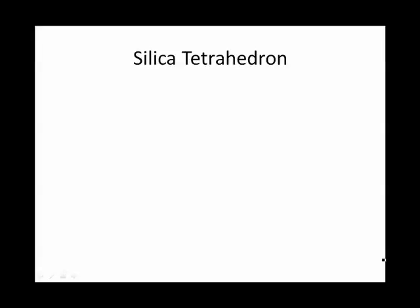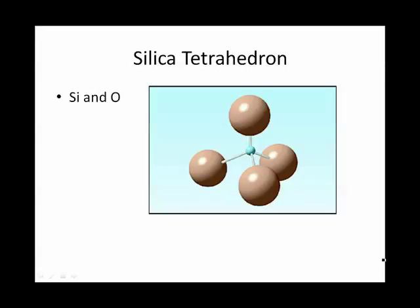The building block of a silicate mineral is the silica tetrahedron composed of silicon and oxygen. It has one silicon atom in the center, and it's bonded to four oxygens around, so the formula is SiO4. The bonds holding the silicon to the oxygen are covalent bonds, which are pretty strong bonds.